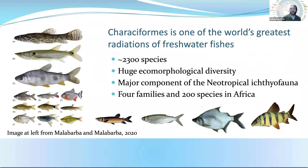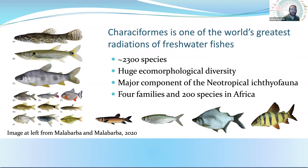Characiformes is truly one of the world's greatest radiations of freshwater fishes — more than 2,000 species, about 2,300 at the last count, with just enormous ecomorphological diversity. All of the fishes shown here are traditionally placed in Characiformes, with the ones on the left being all neotropical examples — species that occur in South America — and the four on the bottom being representatives of the four families that occur in Africa. This radiation is widespread on both Africa and the neotropics.